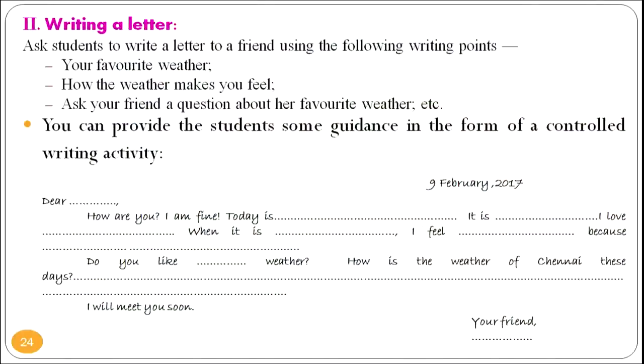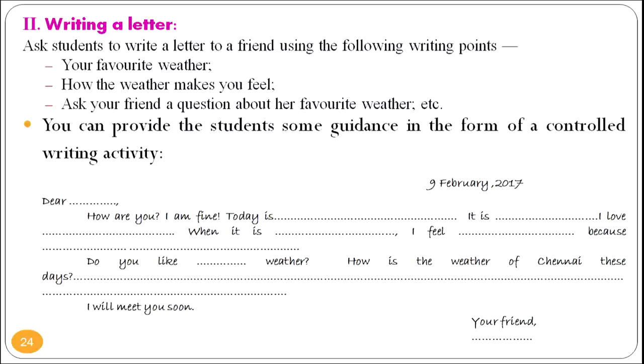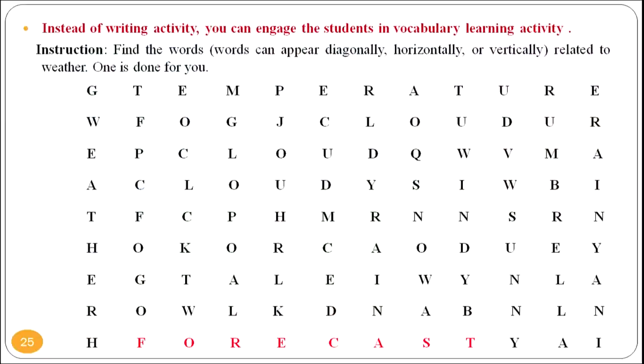For writing: ask students to write a letter to a friend using these writing points — your favorite weather, how the weather makes you feel, and ask your friend a question about her favorite weather. You can provide guidance in the form of a controlled writing activity. You can also engage students in a vocabulary learning activity — give them a chart and ask them to find weather-related words that appear diagonally, horizontally, or vertically. One is done for you — the word 'forecast' highlighted in red.